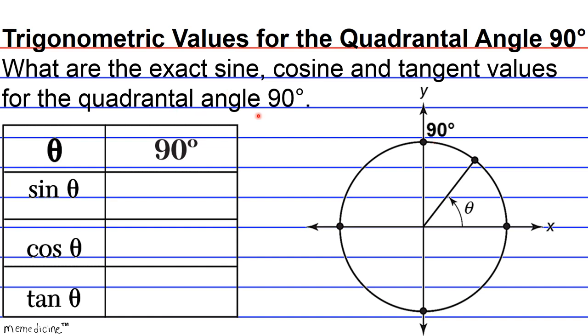A quadrantal angle is an angle with its terminal side on the x or y axis, such as 0 degrees, and you can see here 360 degrees as well, 90 degrees, 180 degrees, et cetera.